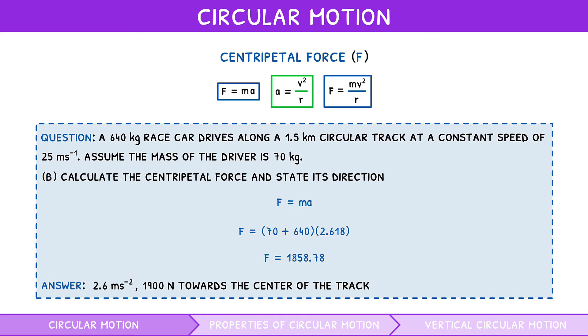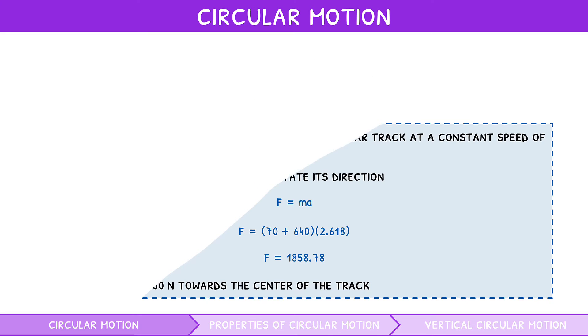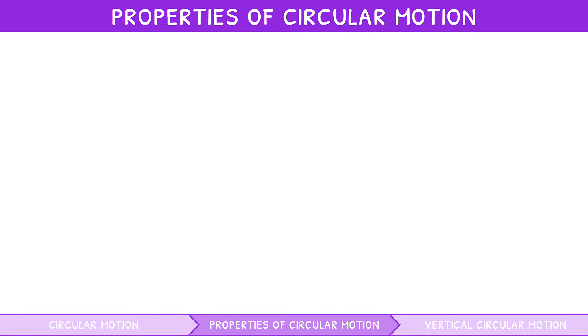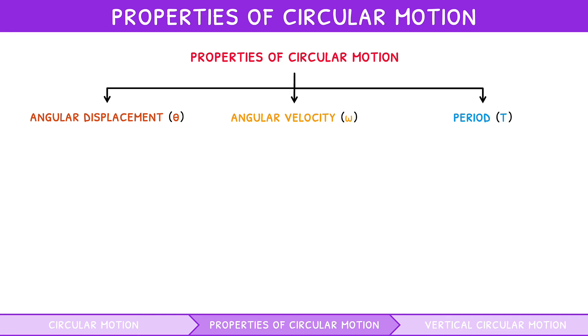So, you now know about circular motion, and the resulting centripetal force and acceleration. However, circular motion involves 3 new properties you must be aware of. Let's explore these now. The three new properties are angular displacement, angular velocity, and period.